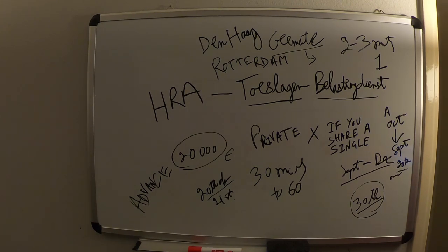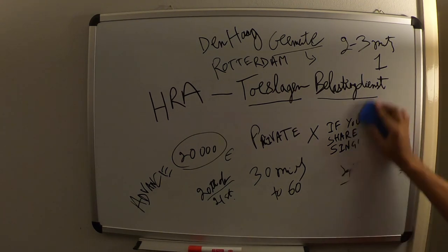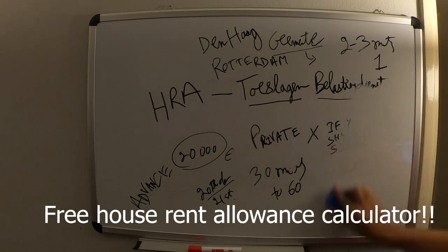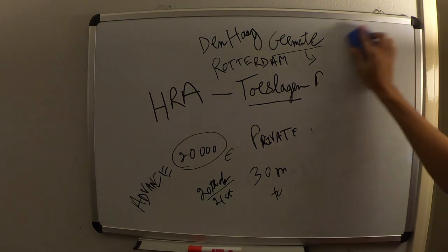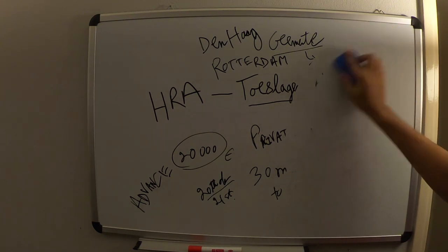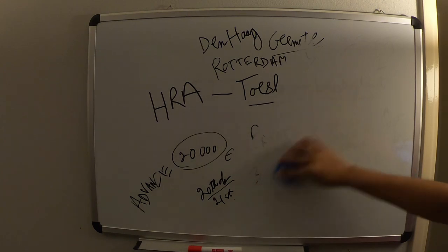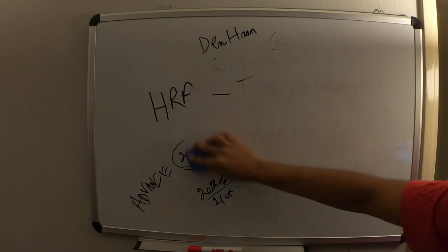There is a free calculator which you can find on the tax authorities website — also findable via Google. What that free calculator does is give you an estimate of how much allowance you can get. I won't go into the details of that unless someone asks in the comments.